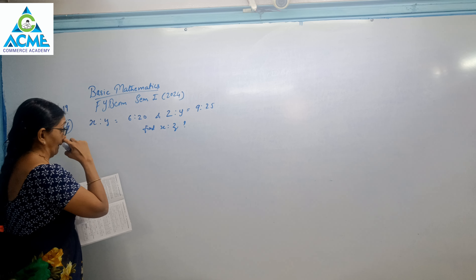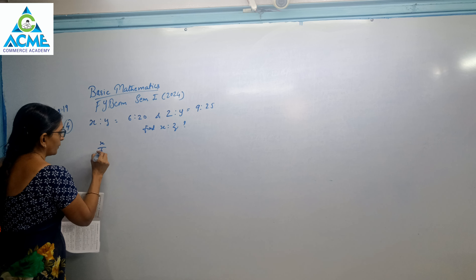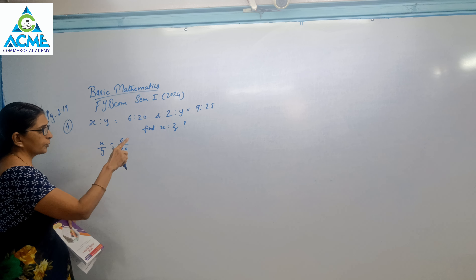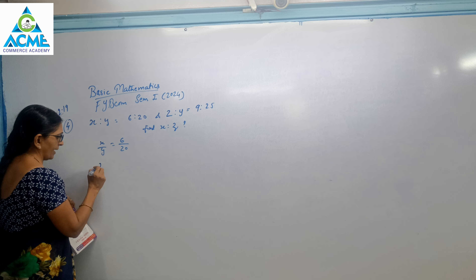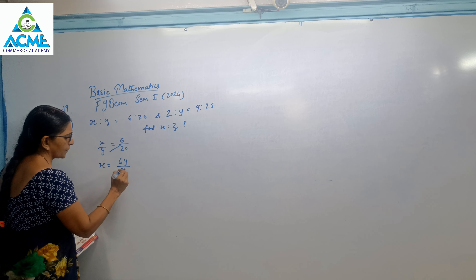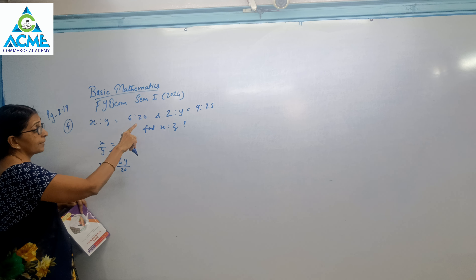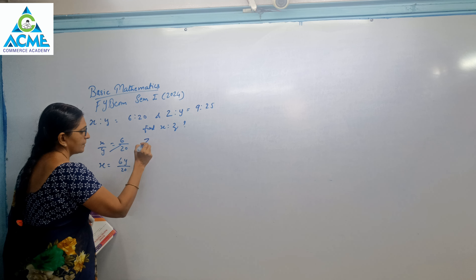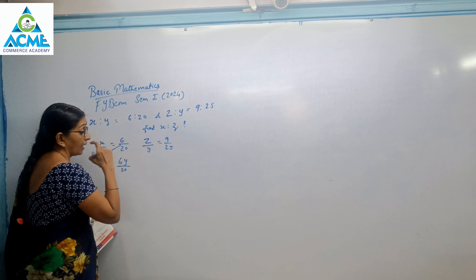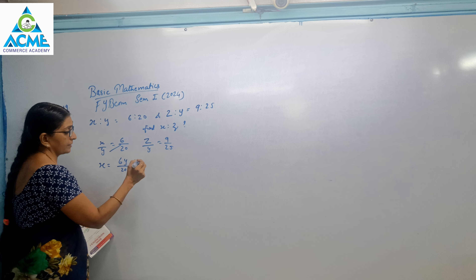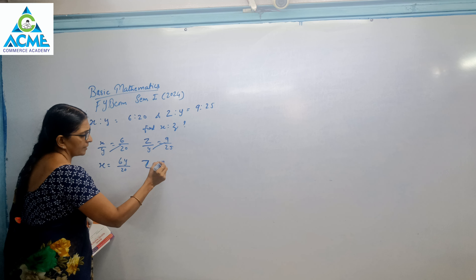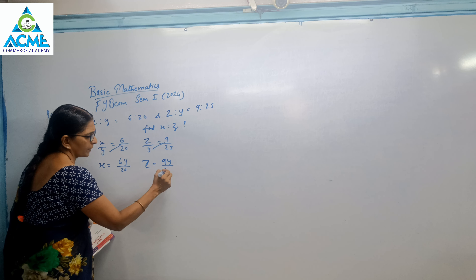You have to find x is to z. Here x upon y is equal to 6 upon 20 — we put x outside and cross multiply: x equals 6y upon 20. Now z upon y is equal to 9 upon 25 — similarly put z outside and cross multiply: z equals 9y upon 25.